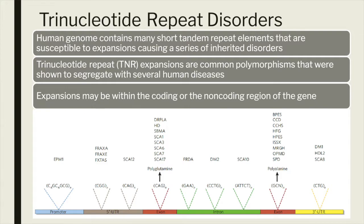In certain individuals, these repeats may be expanded to something called a pre-mutation, where they are neither small enough to be considered normal or physiologic, nor are they large enough to be considered pathogenic. These individuals may be phenotypically normal, but they have a propensity to transmit a larger expanded repeat to the next generation. There lies the molecular mechanism behind repeat disorders.